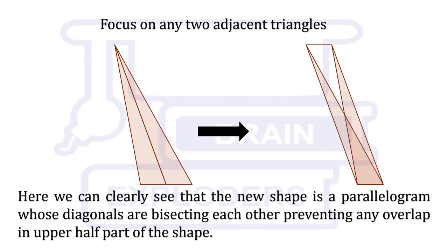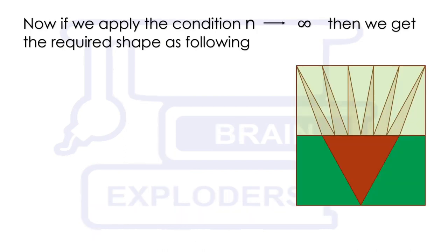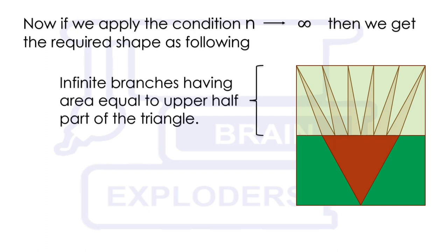We know that the diagonals of a parallelogram bisect each other, and therefore there will be no overlap in the upper part of this parallelogram. If we divide our triangle into an infinite number of smaller triangles, then the shape will be formed something like this. Here we have not shown infinite branches, only 6 branches, but there will be infinite branches.